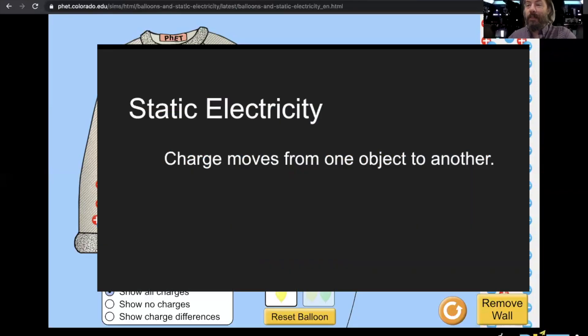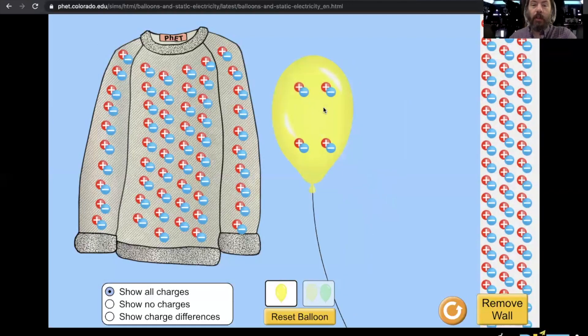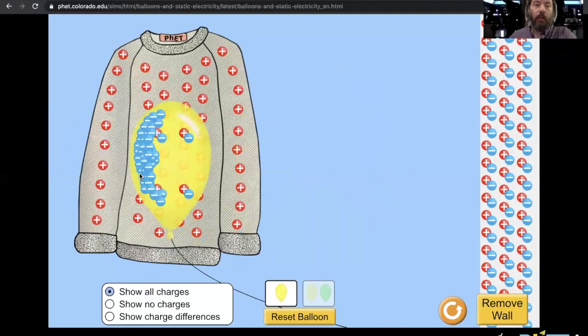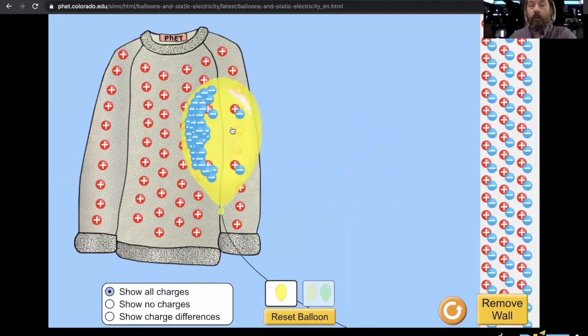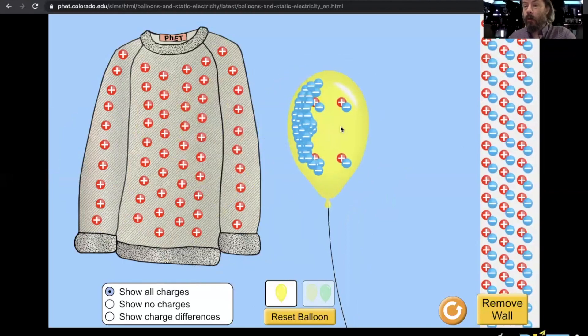Now static electricity in general is basically the transfer of charge from one object to another. So if I take the balloon and I rub it on my sweater, I will actually knock off by doing work, force over a distance by moving those electrons to the balloon.